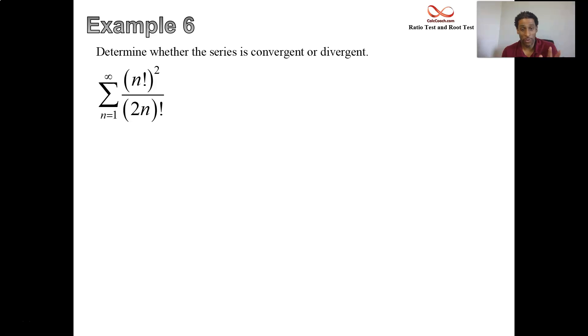First up we have n factorial squared on top of 2n quantity factorial. Our job is to decide whether it converges or diverges using the ratio test. When you see factorials, go with the ratio test.